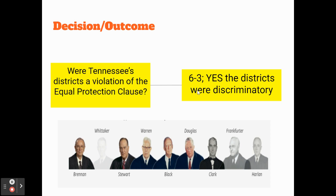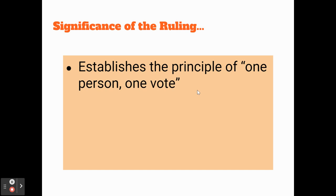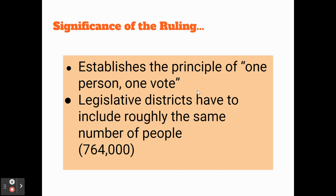The court decided that the districts violated the Equal Protection Clause. The significance of the ruling establishes a principle called One Person, One Vote. This means that legislative districts can be drawn in really funky shapes, but they roughly have to include the same number of people — approximately 764,000 people, plus or minus around 10,000. Baker v. Carr is the Supreme Court ruling that establishes that even if districts are drawn in funny shapes, they must include roughly the same number of people.